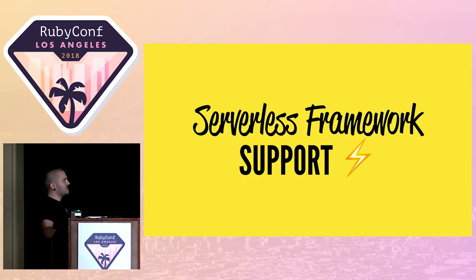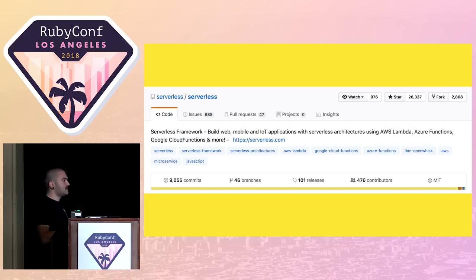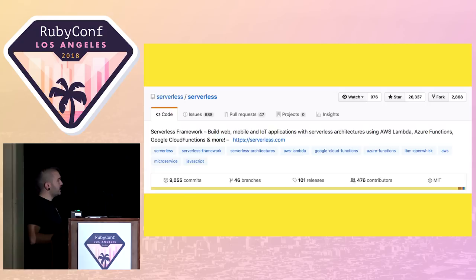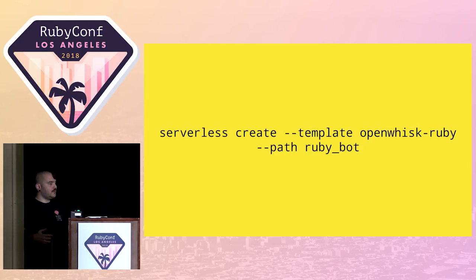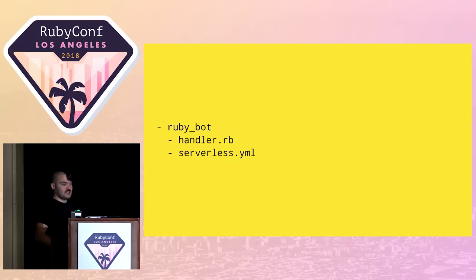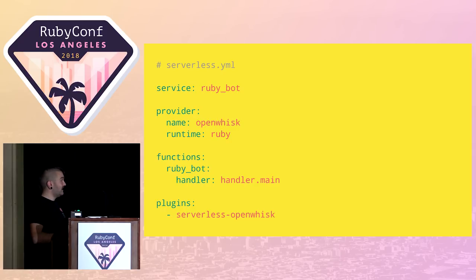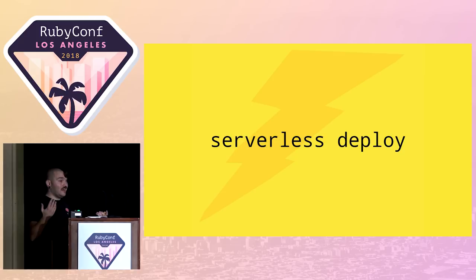Another great thing that came out recently is serverless framework support. The serverless framework is the most popular framework for building serverless applications on top of AWS Lambda, Apache OpenWhisk, Azure Functions, and basically all major providers. You can run `serverless create` with a template for OpenWhisk Ruby and generate boilerplate for your serverless function. You get a handler.rb where you put your Ruby function, and a serverless.yaml configuration file where you specify plugins, runtime, and how to invoke it. In a couple of minutes you do `serverless deploy` and it's on IBM Cloud Functions.